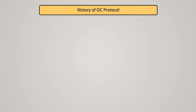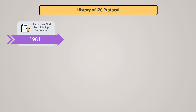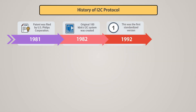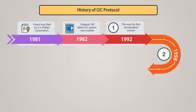Before going into the I2C working principle, let's have a look at its history. In 1981, a patent was filed on November 2nd by U.S. Philips Corporation. In 1982, the original 100 kbps I2C system was created as a simple internal bus system for building control electronics with various Philips chips. In 1992, 400 kbps fast mode and a 10-bit addressing mode increased capacity to 1,008 nodes — this was the first standardized version. In 1998, the I2C bus became a world standard implemented in over 1,000 different ICs and licensed to more than 50 companies.